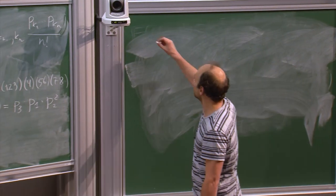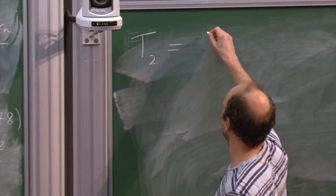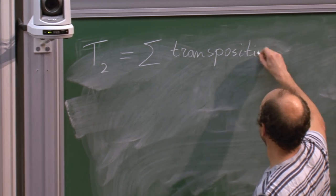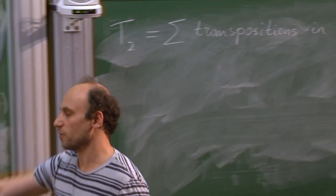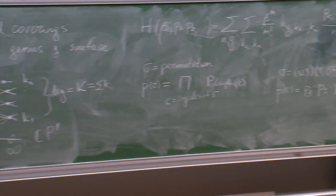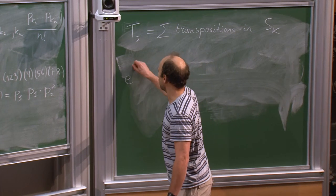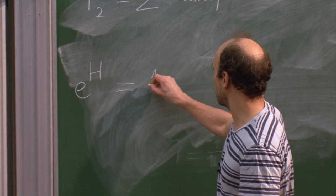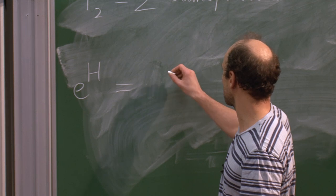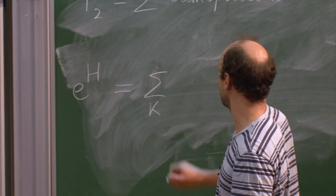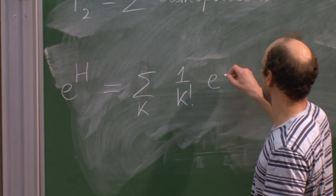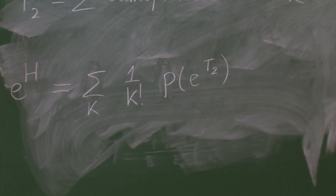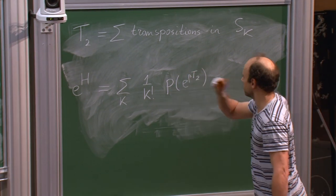Denote by T₂ the sum of transpositions in S_K, where K is the degree of the covering. Then I claim that exp(H), the exponential of this generating series, equals the sum over K of 1/K! times P(e^{β T₂}). This is the correct formula.